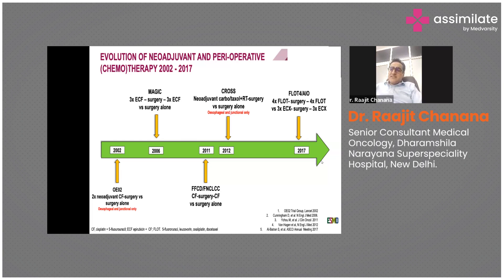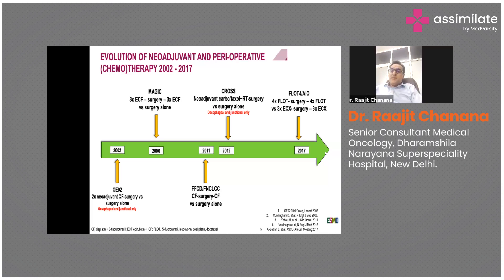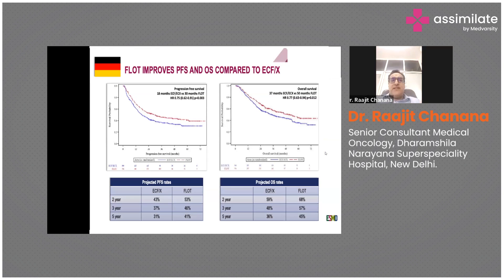In 2017, the FLOT trial came - a Dutch study. FLOT is a three-drug regimen: 5-FU, leucovorin, oxaliplatin, and docetaxel. This was compared with ECX from the MAGIC trial, and FLOT was found to be the best treatment before surgery, resulting in better survival, decreased surgical complications, and improved outcomes.